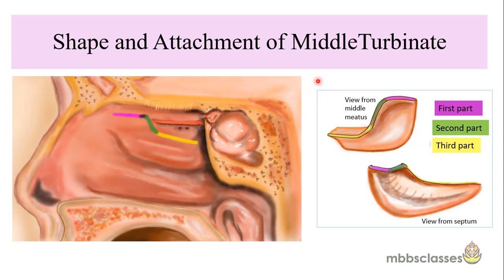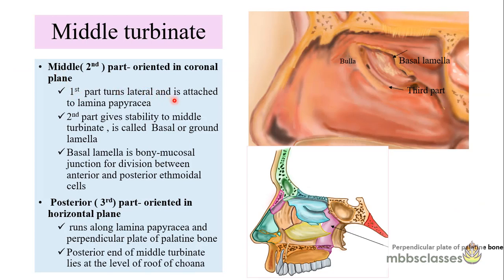The shape of the middle turbinate can be compared to the shape of a dried leaf. The first part is oriented in the sagittal plane, then it turns laterally and is attached to the lamina papyracea arranged in the coronal plane, and the third part is in the horizontal axis. The area of attachment of the middle turbinate to the lamina papyracea is called the basal or ground lamella. It provides stability to the middle turbinate, acts as a bony mucosal junction, and divides the anterior and posterior group of ethmoid cells.